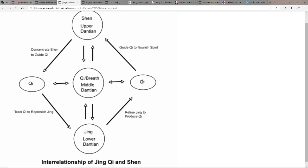And then here we see an interrelationship between jing, chi, and shen. Again, jing residing in the lower dantian: refine jing to produce chi, guide chi to nourish spirit. And you see over here it's all about the breath.